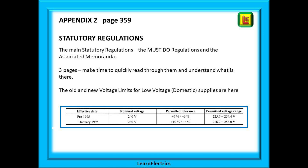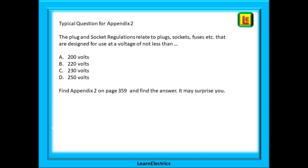Appendix 2 is a list of the relevant statutory regulations — statutory must-do regulations like the Health and Safety at Work Act, the Building Regulations etc. There are only three pages and you are very likely to get an exam question on appendix 2, so now is the time to at least look over the pages. The old and new voltage ranges are also in this appendix, and a common exam question is: what is the date that the voltage range changed? Here is a typical question: the plug and socket regulations relate to plugs, sockets, fuses etc. that are designed for use at a voltage of not less than — somewhere on those three pages you'll find a reference to the plug and socket regulations. Find that and you'll find the answer. It really is that easy.